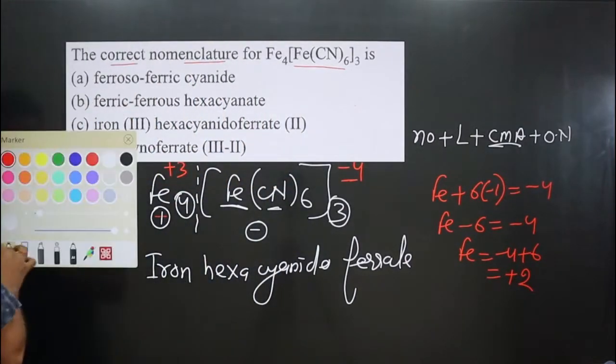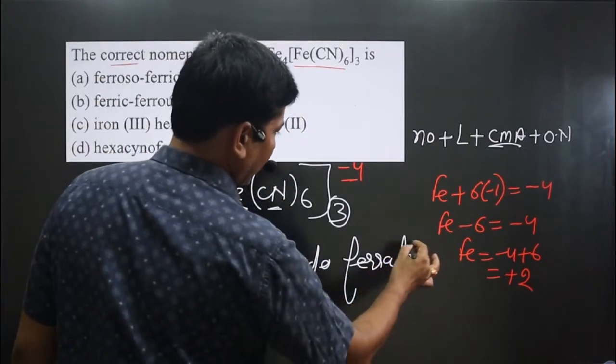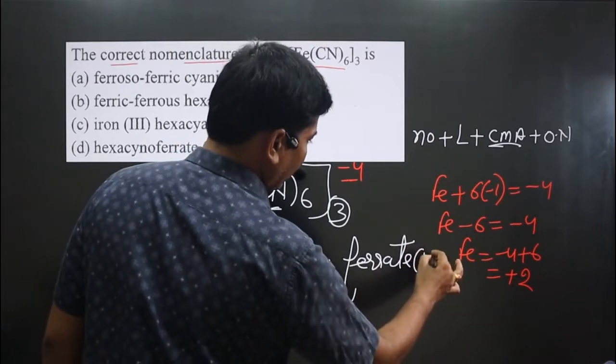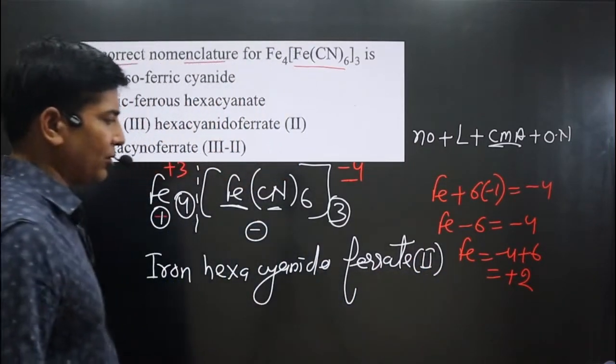We have to write this oxidation number in Roman numerals, so we get ferrate(II).